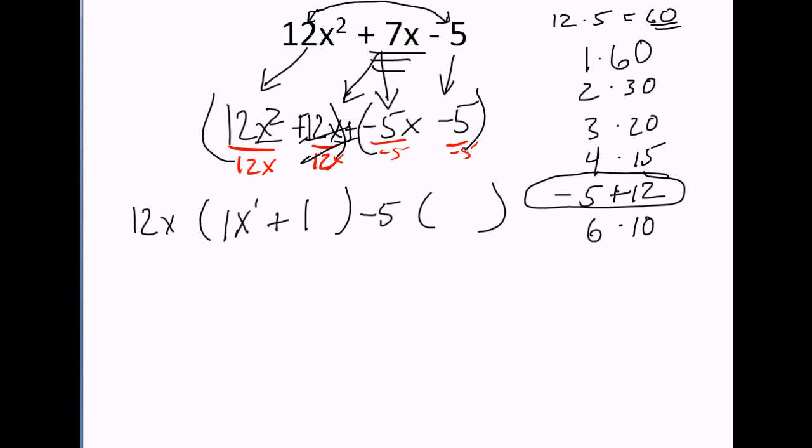That's what we factored out. Anytime the third term is negative, you have to factor out a negative sign also. Negative 5 divided by negative 5 is 1x. Negative 5 divided by negative 5 is a positive 1. Do you see how my parentheses are identical? 1x plus 1, 1x plus 1.